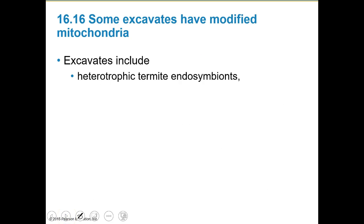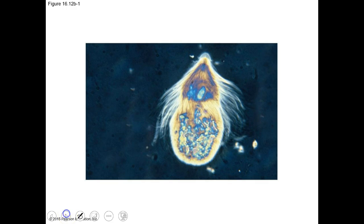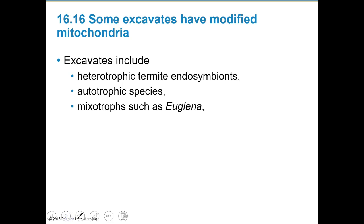Excavates include a whole bunch of things, including the termite endosymbiont. Termites eat wood but cannot break it down by themselves — they actually require a protist to do so. Excavates also include some autotrophic species and mixotrophs like euglena.